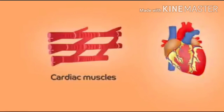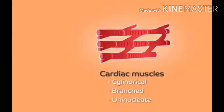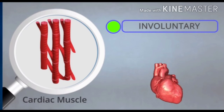Then come cardiac muscles — the muscles of the heart showing rhythmic contraction and relaxation throughout life. These are also involuntary muscles and are called cardiac muscles. Heart muscle cells are cylindrical, branched and uninucleate. These heart muscles show rhythmic contraction and relaxation throughout life. They do their work on their own without our guidance.